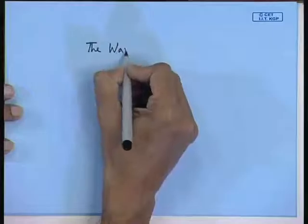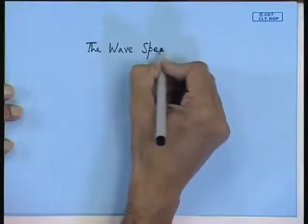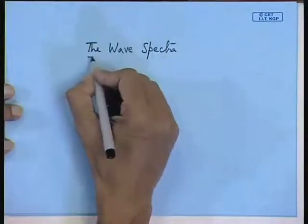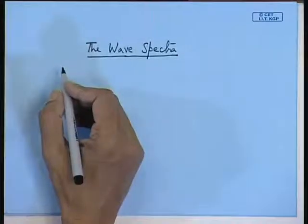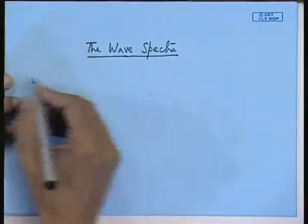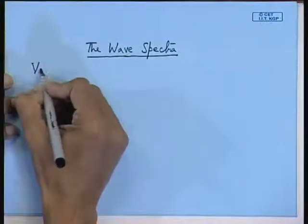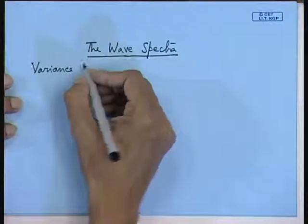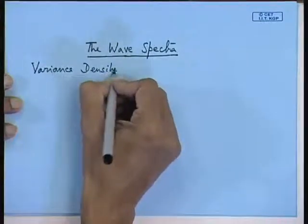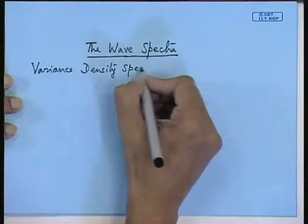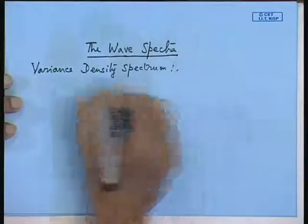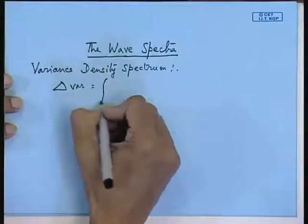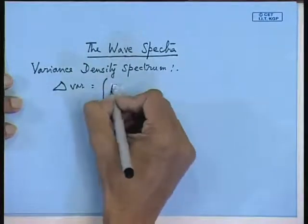Today let us finish this wave spectra. Here we have how to obtain the spectra — it is called the variance density spectrum. We obtained this last class: the density is obtained by dividing by the frequency. That is, delta variance equals the sum over delta f, and this is your E(f) df.